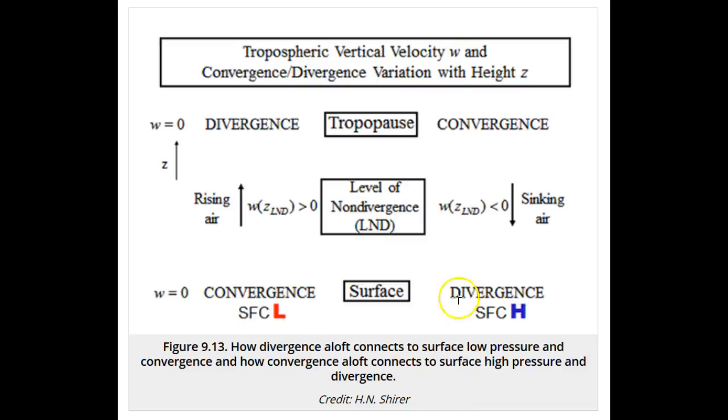If we have divergence near Earth's surface, which occurs in high-pressure areas, then there is convergence at the tropopause. In between, the vertical velocity is downward, that is, w is negative.